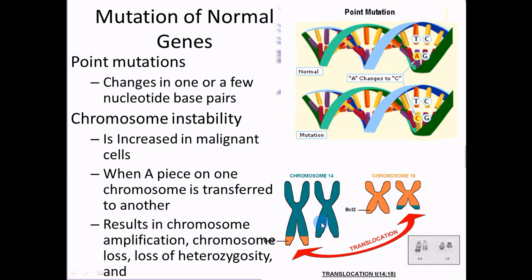We talked about inversions, where you take a piece of chromosome, break it off, and the repair enzymes flip it and glue it in backwards. A couple we'll talk about are chromosome amplification, chromosome loss, and loss of heterozygosity. We'll also talk about caretaker genes.